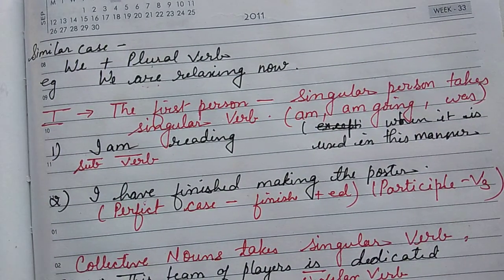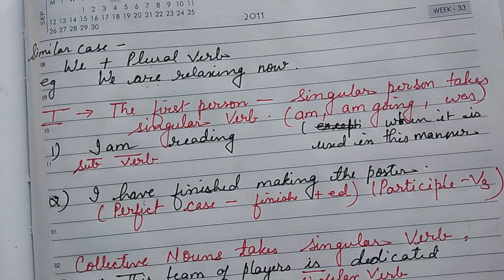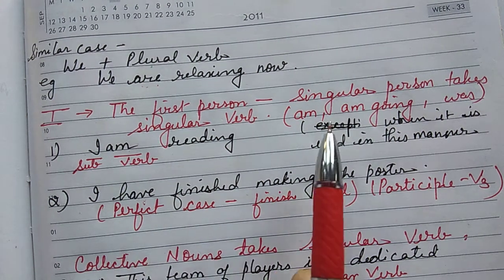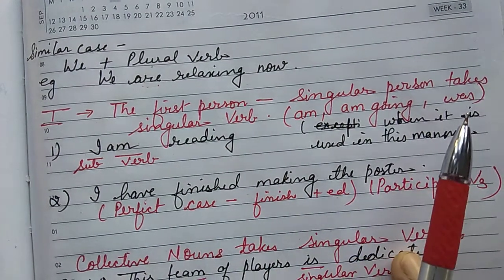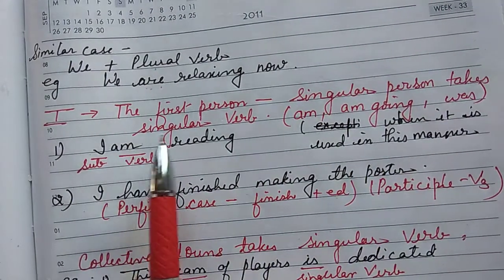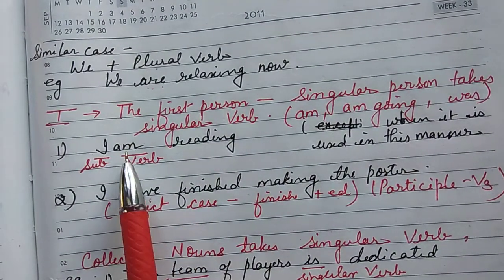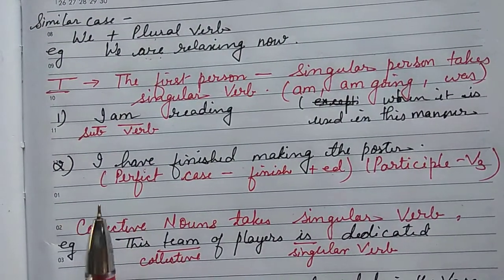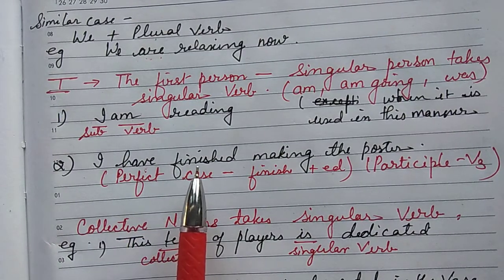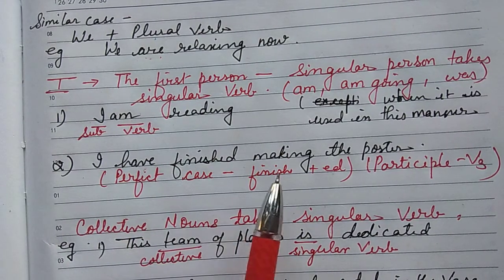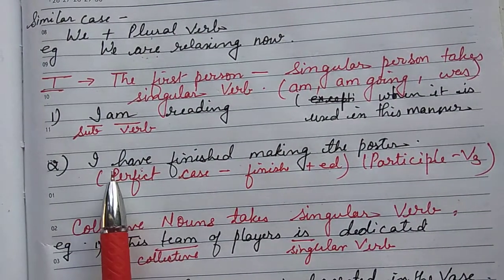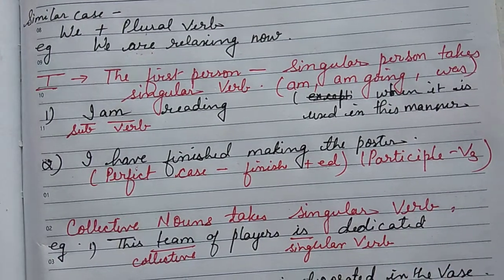For the first person 'I,' we do not use 'I are'; we use 'I am' or 'I am + verb' or 'I have.' The first person singular takes the singular verb. For example, 'I am' — 'am' is the singular verb. When using perfect tenses with 'have,' the verb takes the V3 form — the past participle — such as 'finished.'